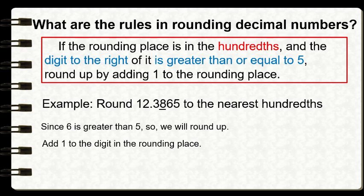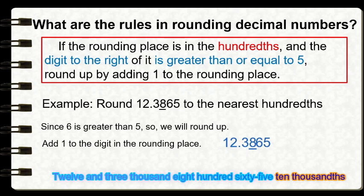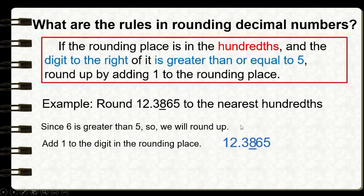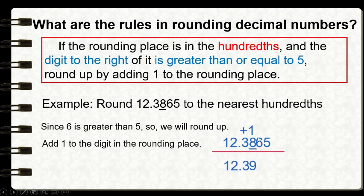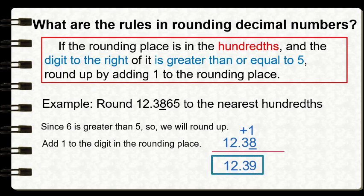Since six is greater than five, we will round up — meaning we are going to add one to the digit in the rounding place. Looking at our given, twelve and three thousand eight hundred sixty-five ten-thousandths, our rounding place is the hundredths place, occupied by eight. We add one to eight: eight plus one equals nine. We copy all digits to the left of our rounding place — that is twelve and three tenths — and drop all digits to the right. So our answer is twelve and thirty-nine hundredths.